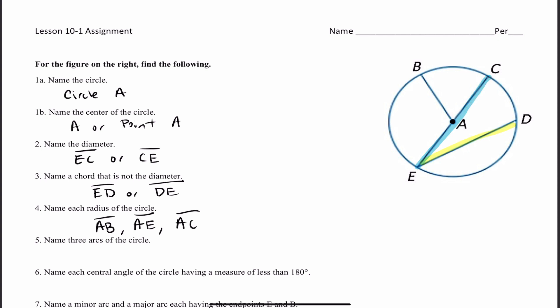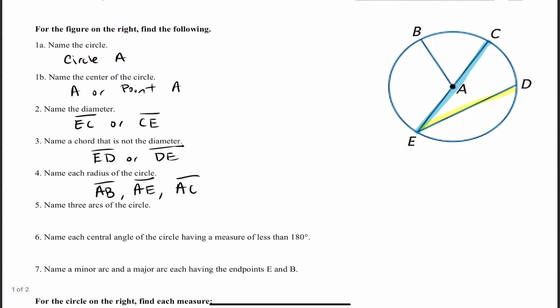Number 5: name three arcs of the circle. An arc — we look at the endpoints. So I can call this arc EB or arc BE, both will work. This right here is another arc, so I can call that arc BC or arc CB.